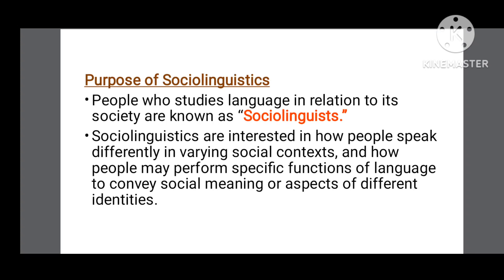What are the purposes of sociolinguistics? People who study language in relation to its society are known as sociolinguists. Sociolinguists are interested in how people speak differently in varying social contexts, because people use different language according to their social context and intended meaning. They also study how people perform specific functions of language to convey social meaning or aspects of different identities. Moreover, language is also an identity marker, and sociolinguists are interested in finding out how language acts as an identity marker.